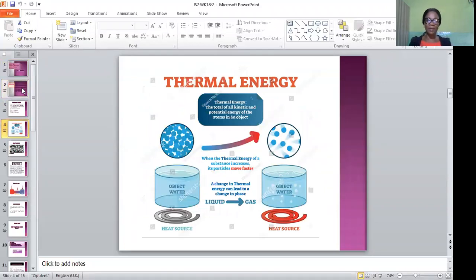From my diagram here, you will see that thermal energy is the total of all kinetic and potential energy of the atoms in an object. When the thermal energy of a substance increases, its particle moves faster, like in boiling water. It is also a change in thermal energy which can lead to a change in phase. When heat is applied through burner to a pot, the liquid will turn to gas. That is, it is a change of state when heat is applied.